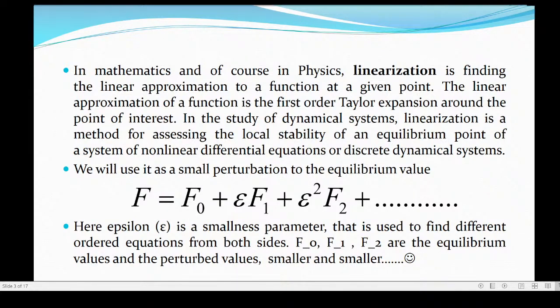We use a small perturbation. What is a perturbation? A perturbation means a slight disturbance to an equilibrium value. So suppose this f is a variable or a function. That function is equal to the equilibrium value plus epsilon. Epsilon is often called the perturbation parameter or the smallness parameter. These are the first order perturbation, this is the second order perturbation and so on.